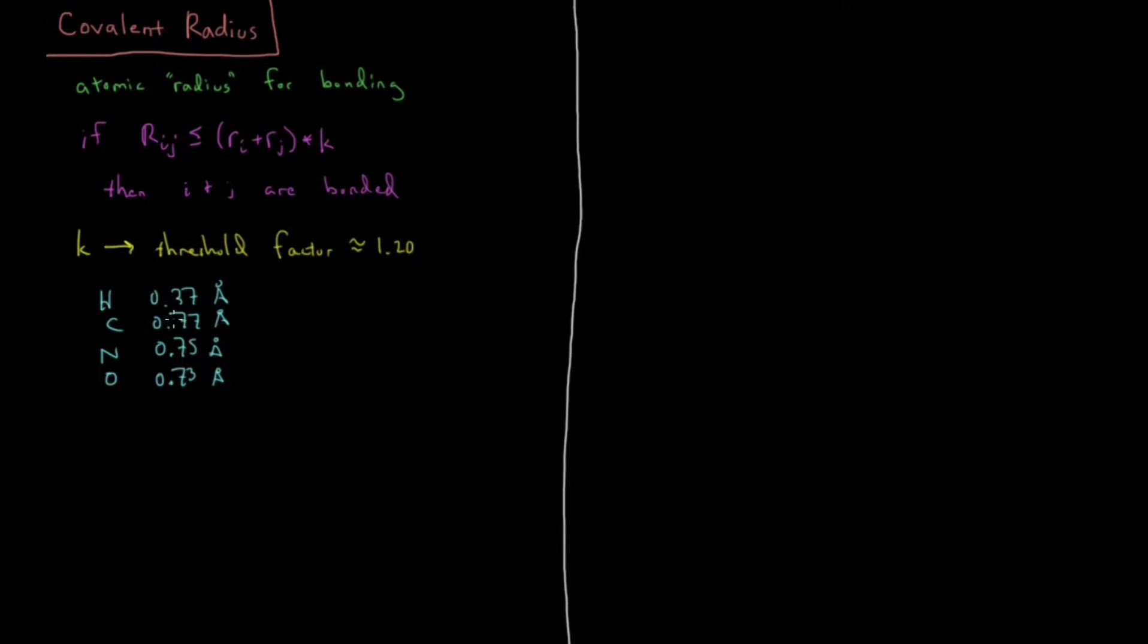For these covalent radii, if we want to determine all the bonds in a molecule, let's say we have n atoms in a molecule, like we do in a typical XYZ file. How many pairs of atoms are we going to have? We're going to have n times n plus 1 over 2 pairs of atoms.